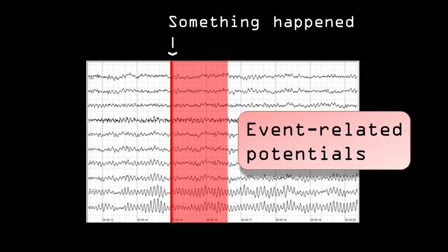This is what we call event-related potentials, which means potentials—that is, EEG signals—related to a certain event. But I will talk more about event-related potentials in a future video, so look out for that.